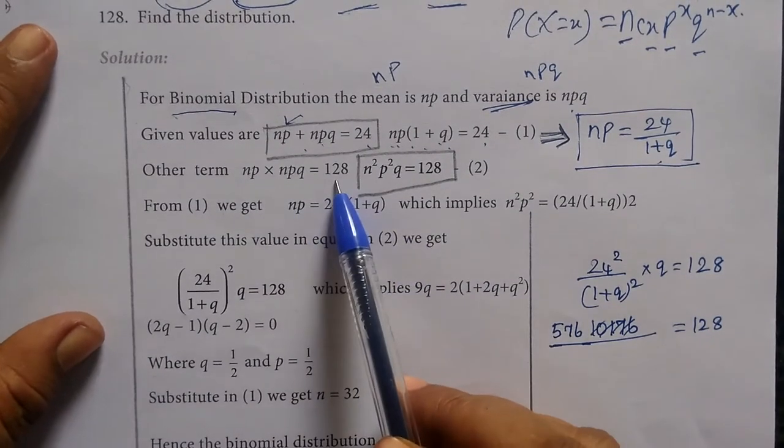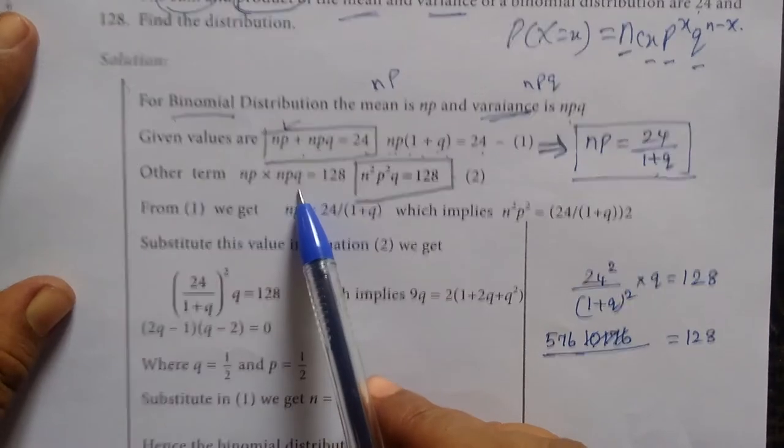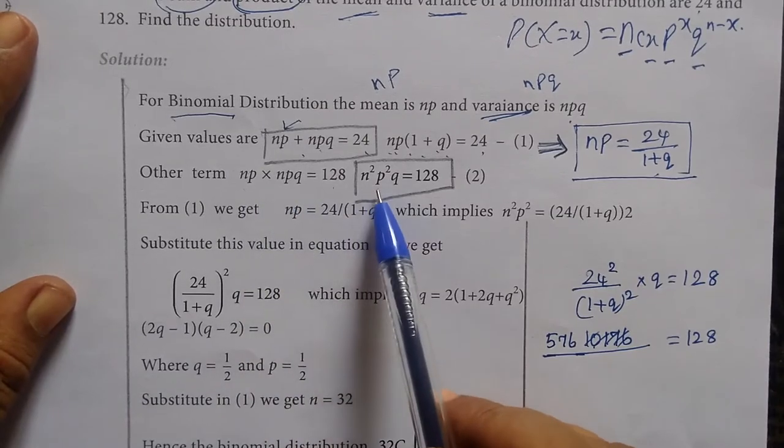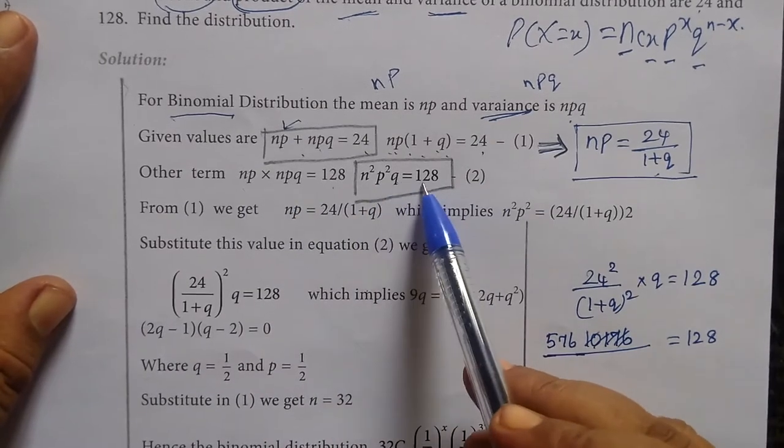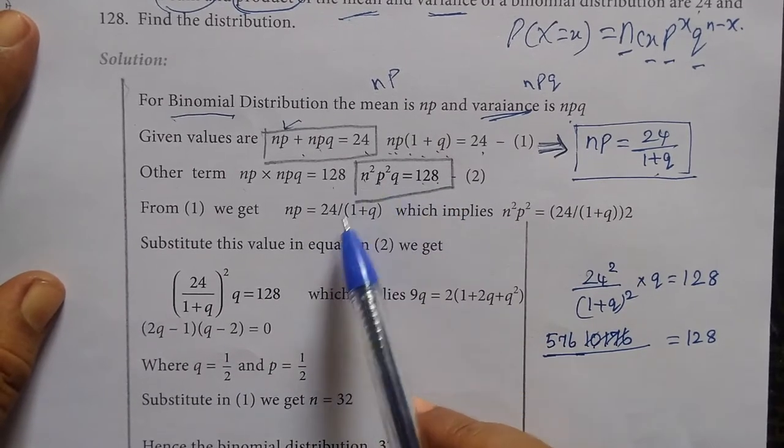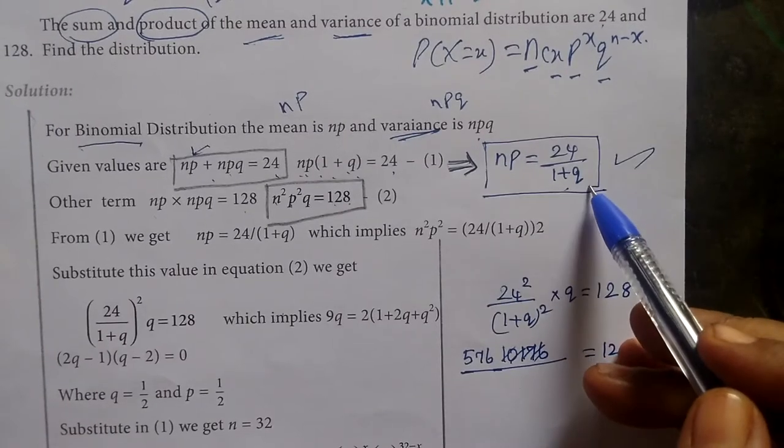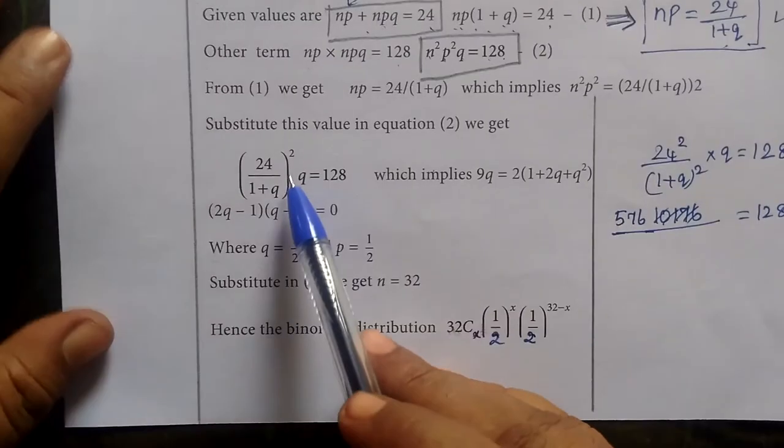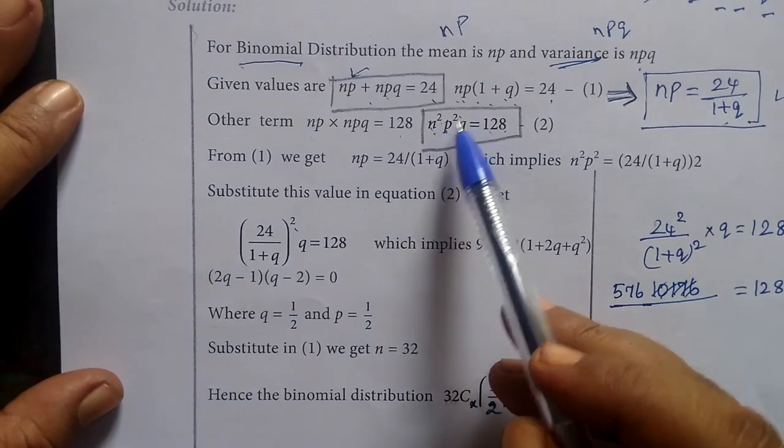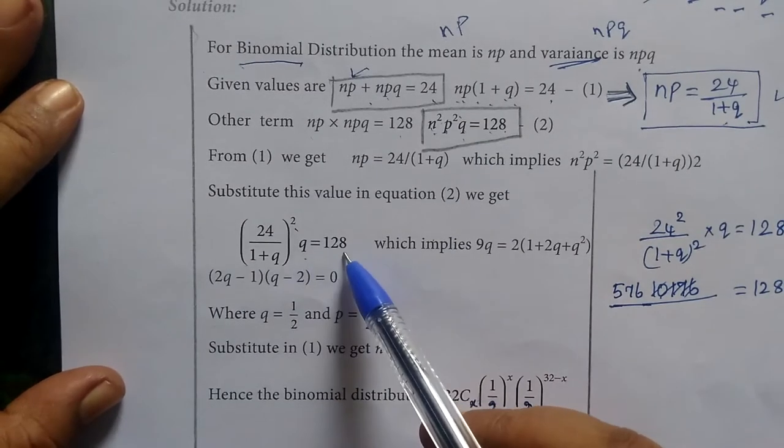Next, product is 128. Then np multiplied by npq equals 128. So n squared p squared q equals 128. Now, np times 1 plus q equals 24, so np whole squared equals n squared p squared.